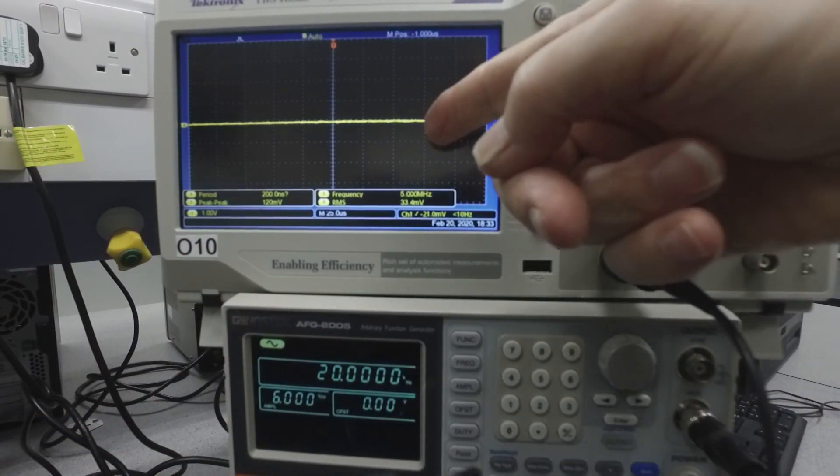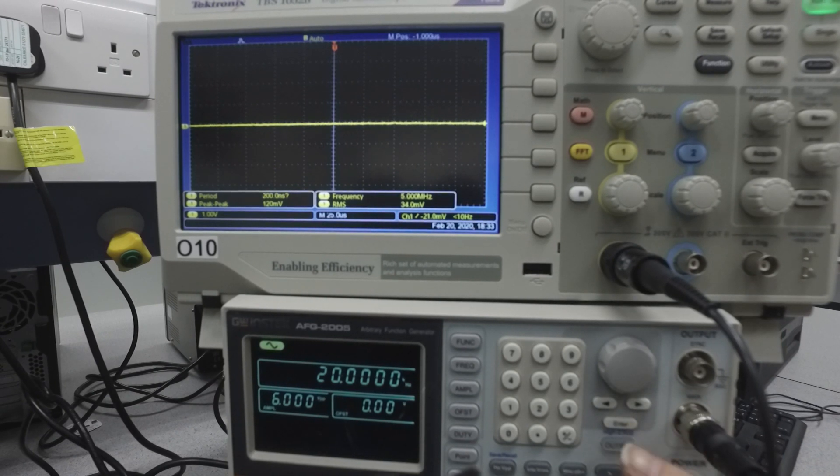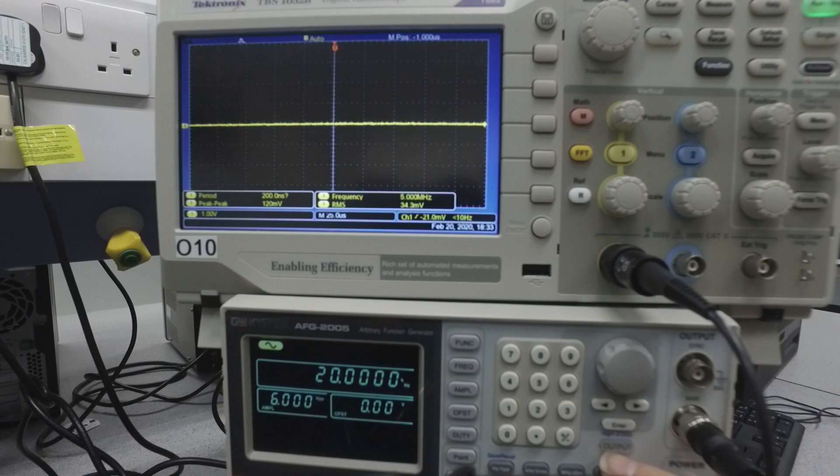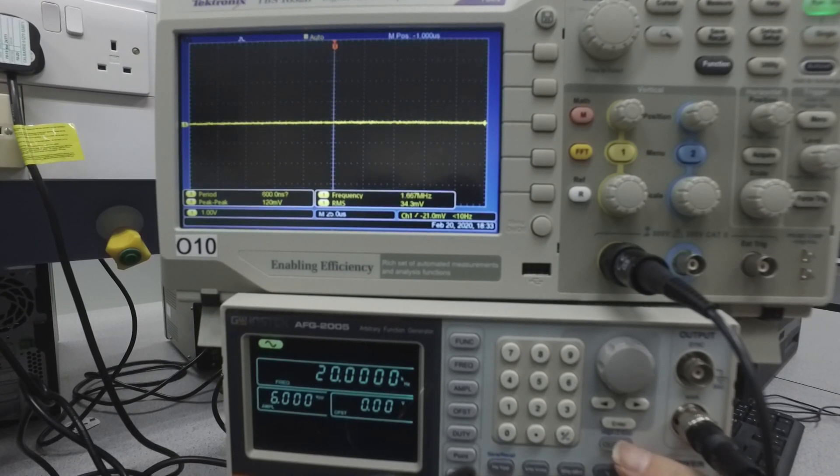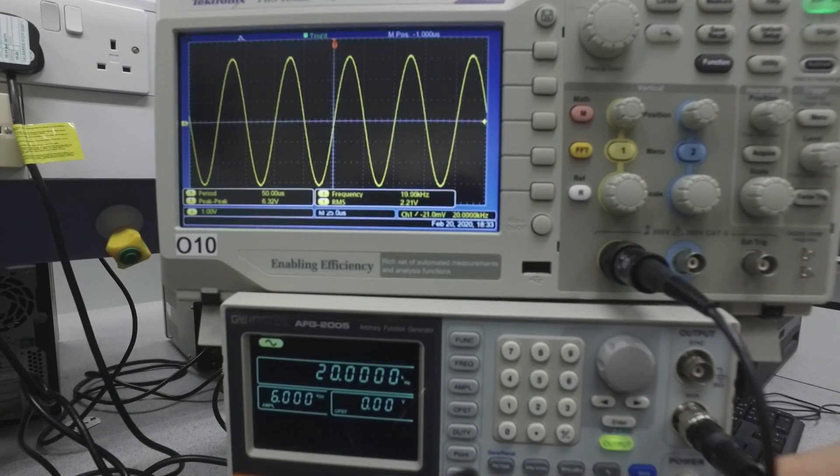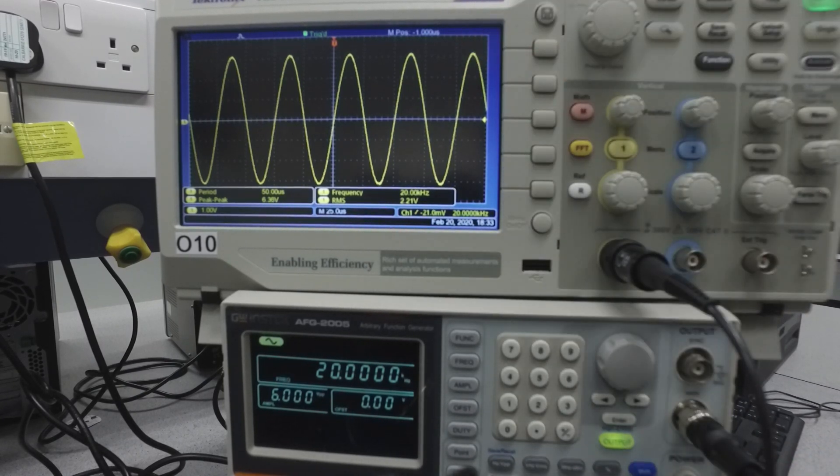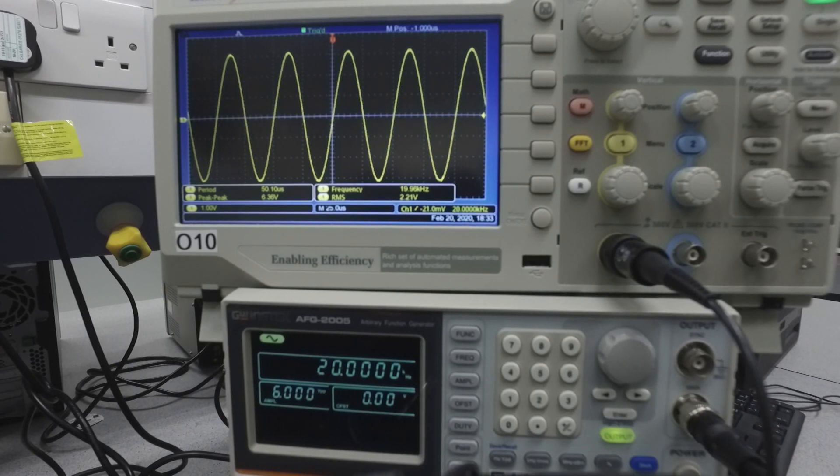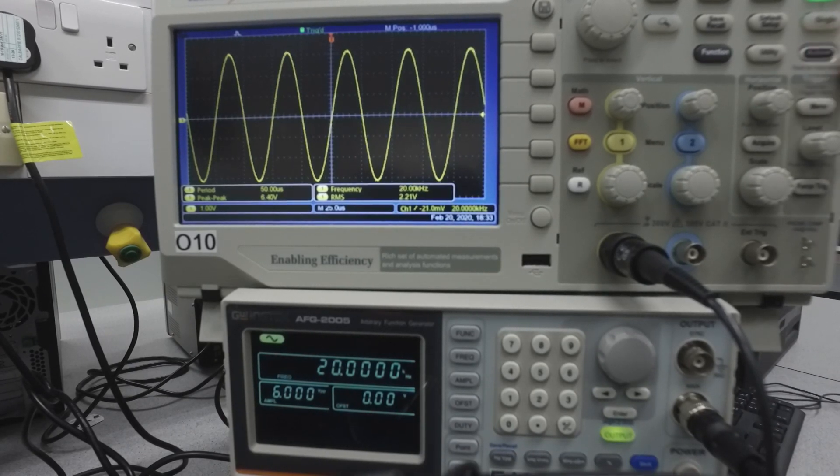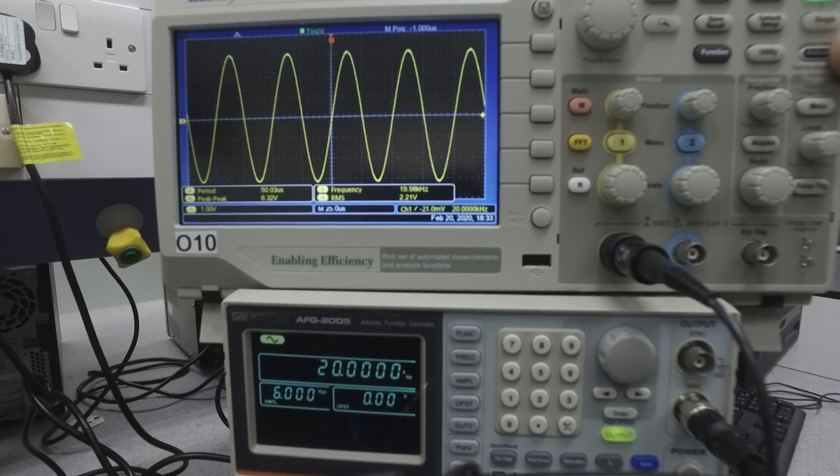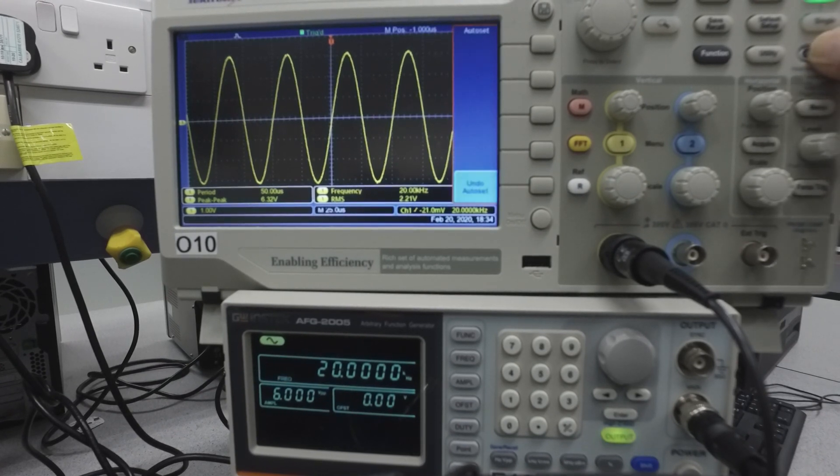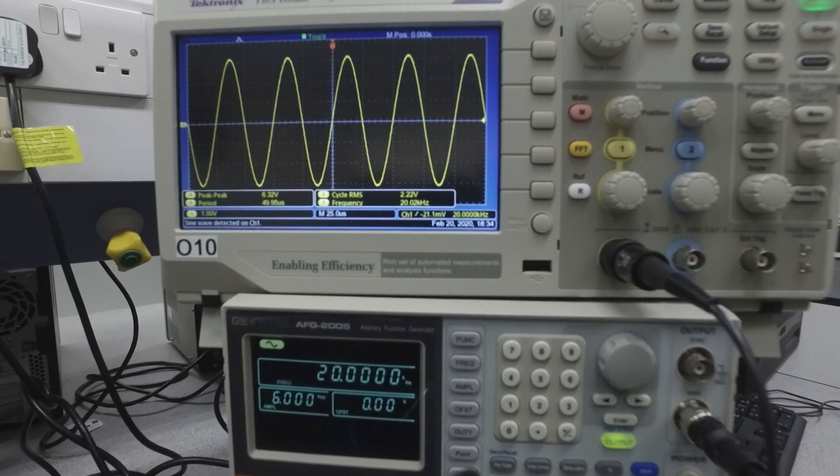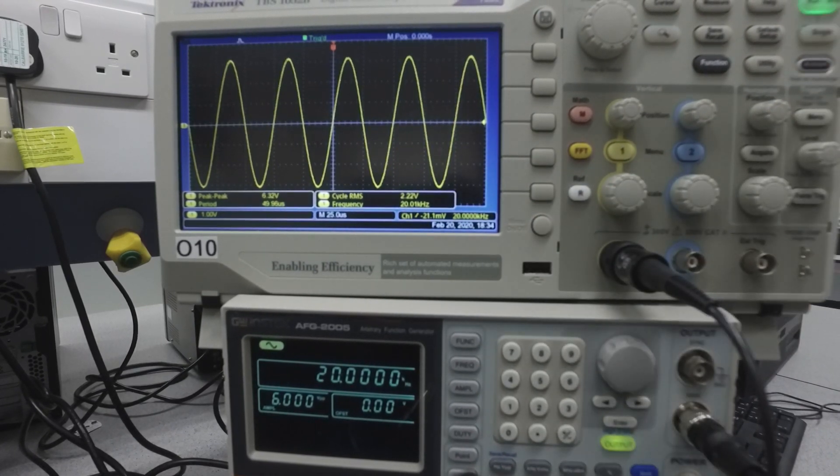But nothing's happened on the scope. So we need to set the output into operator mode on the function generator by pushing the output button. Straight away, that's kicked into life. A signal has appeared on the oscilloscope, which will give us some kind of information. If we want to get a quick reference for that, if we think we've not got the right setting on the oscilloscope, we can push auto set. I suspect it's done its own thing there already. And it's given us representation there.